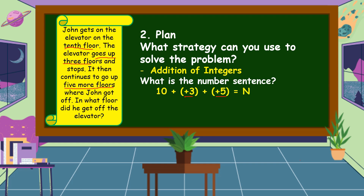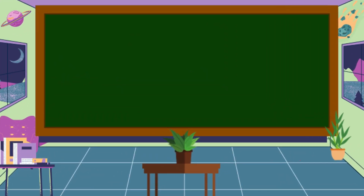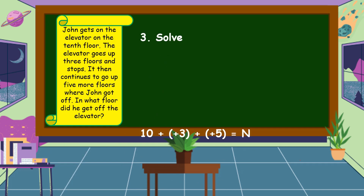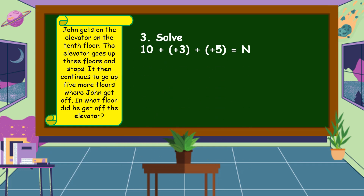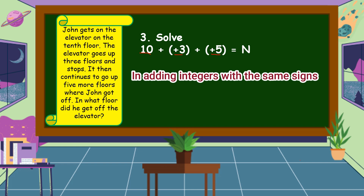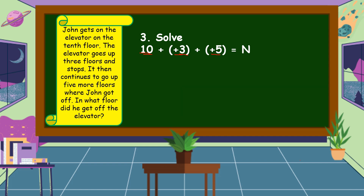The next step is we are going to carry out the plan. Let's solve the problem. Look at the addends — are they all positive? Yes. In adding integers having the same sign, add only the numbers, then copy the common sign. So, 10 plus 3 is equal to 13, plus 5 is equal to 18, and the sign is positive. Therefore, the answer is positive 18.